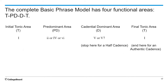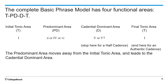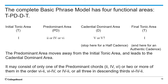The complete basic phrase model has four functional areas: T, PD for predominant, D, and T. Here's a diagram showing which chords go in each of those areas. A progression using this model is very common, as in the first phrase of a Mozart sonata, for example. The predominant area moves away from the initial tonic area and leads to the cadential dominant area. It may consist of only one of the predominant chords — II, IV, or VI — or two or more of them in the order shown: VI to II, VI to IV, or IV to II, or all three in descending thirds. Note that they're not in the order they appear in the ascending scale, but rather in descending thirds ordering.